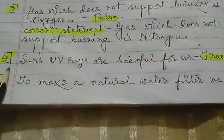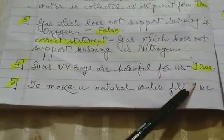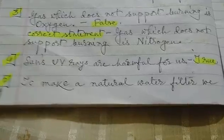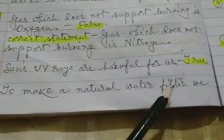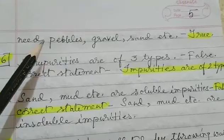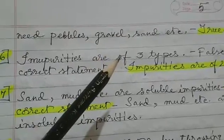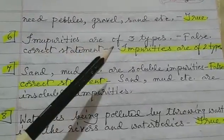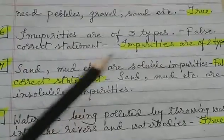Number 4: sun's UV rays are harmful for us. True. Number 5: to make a natural water filter, we need pebbles, gravel, sand, etc. True. Number 6: impurities are of 3 types. False — the correct statement is: impurities are of 2 types.